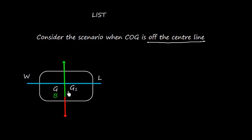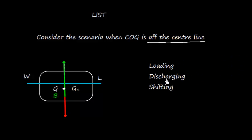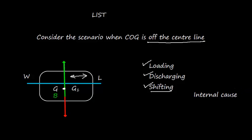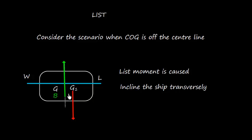Instead of the COG being here at the centerline, the COG has shifted to one side. This can happen because of loading, discharging, or transverse shifting — shifting in the transverse direction. This is an internal cause. If the COG is shifted, a listing moment is created, and this moment will incline the ship in the transverse direction.